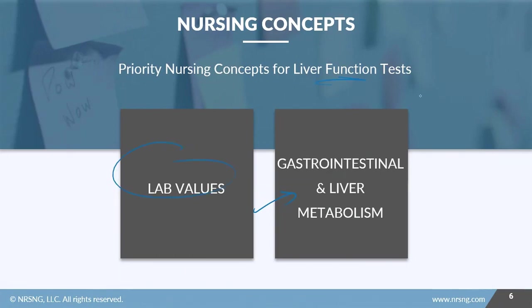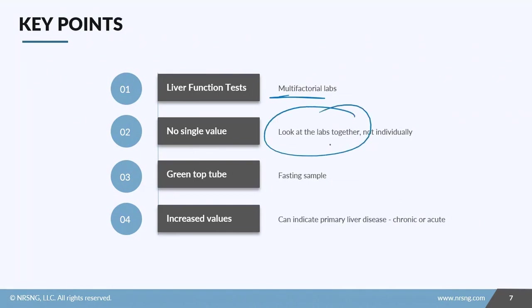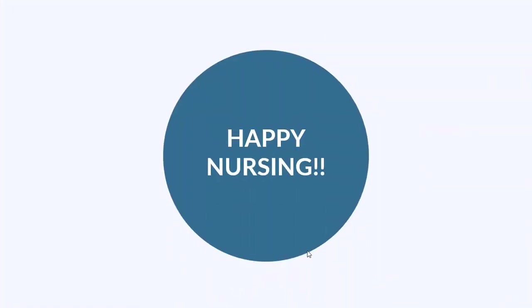To recap: there are many components to liver function tests. Increases in single numbers do not necessarily indicate liver disease — look at all values together. Submit samples in a green top tube and make sure your patient is fasting. Increased values can indicate primary liver disease, which may be chronic or acute, but always look at all the values together. Make sure you check out all the resources attached to this lesson. Go out and be your best selves today, and as always, happy nursing!